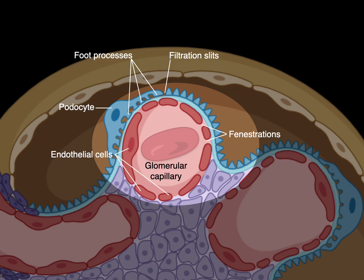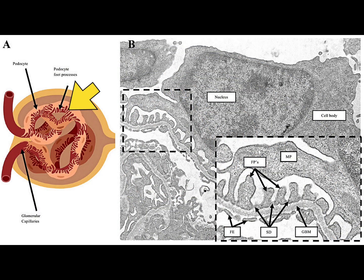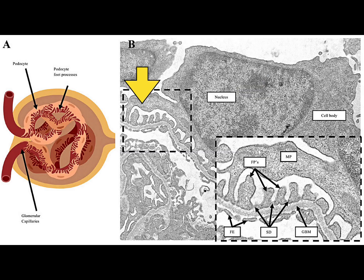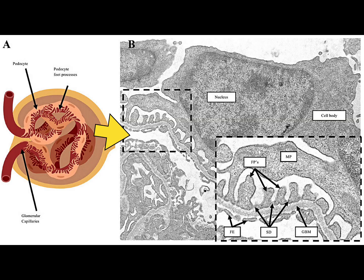The podocytes and endothelial cells have a shared glomerular basement membrane, or GBM — sometimes called the basal lamina. It's comprised of type 4 collagen and negatively charged heparin sulfate, and it further helps to filter plasma. In this EM, the arrow shows the nucleus of a podocyte and part of its foot processes, then the shared glomerular basement membrane, then the fenestrated endothelial cells, and then the lumen of the glomerular capillary where plasma would be. Down here I think this is a mesangial cell.